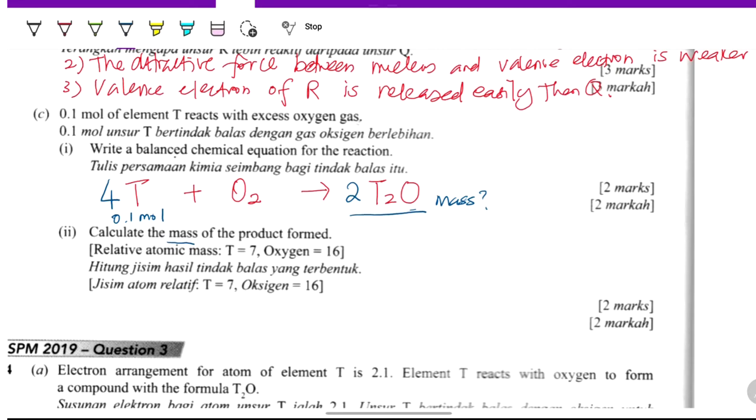If ratio, 4 moles of T produce 2 moles of T2O. So if 0.1 mole of T, the mole produced - we know that it will be half of it, right? 0.05 mole of T2O.